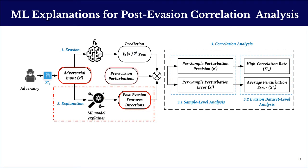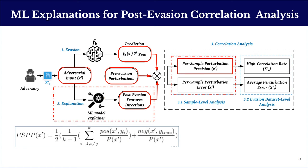Using the post-evasion direction of each perturbed feature of the evasive adversarial sample, we conduct a correlation analysis by defining a suite of metrics. The first metric computes the feature-level perturbation precision of each sample. It is defined as the average of two terms that capture the rate of two different types of evasive perturbations, also called positive perturbations. The first type is perturbations directed to any class yi other than the true label ytrue, and the second type captures those not directed to ytrue.